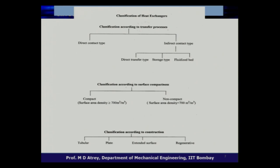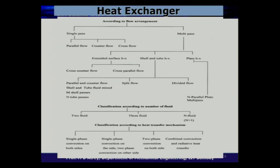Heat exchangers can be classified based on various criteria: heat transfer process, surface compactness, construction type (tubular, plate, extended fin, regenerative), flow arrangement (parallel, counter, cross flow), and number of fluids (two, three, four). Classification according to heat transfer process includes single phase, two phase, combined convection, and radiation.